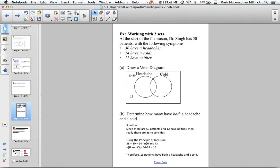We do some calculations, move things around. We get 54, which is the sum of 30 and 24, minus 38, which is patients that have headache or a cold, and we end up with 16. So we know that the intersection of headaches and colds is 16.